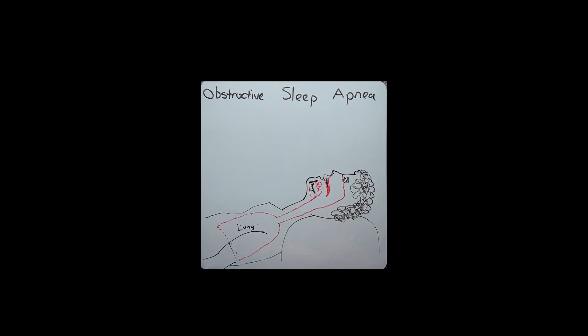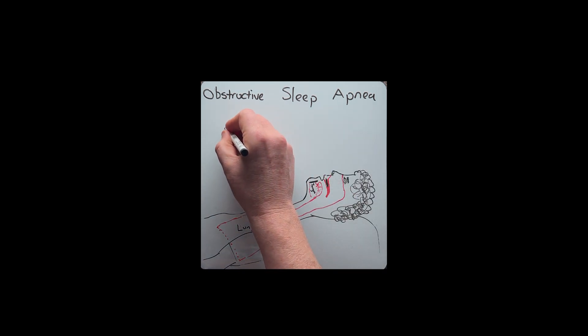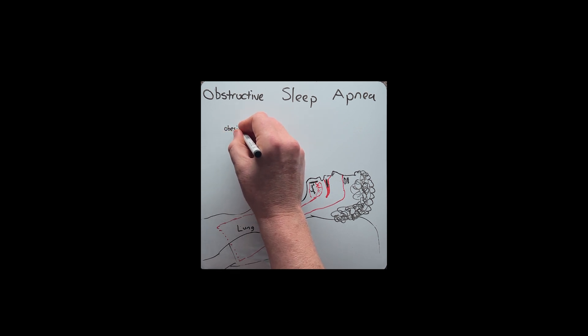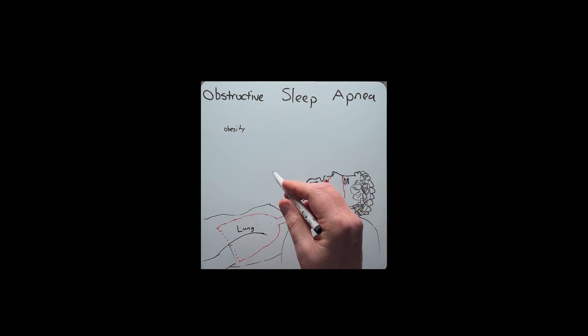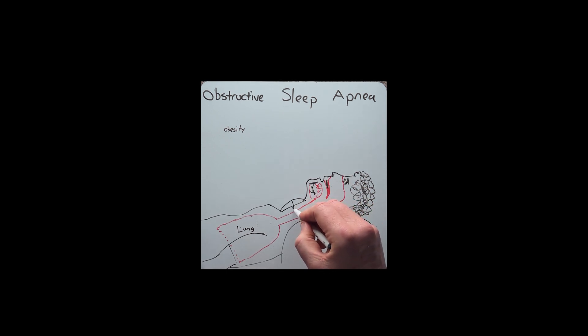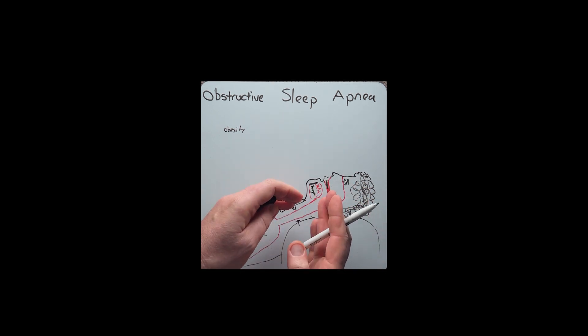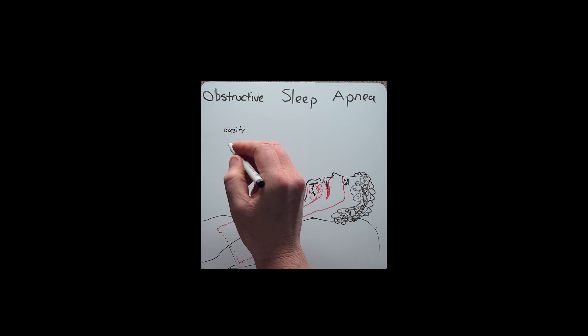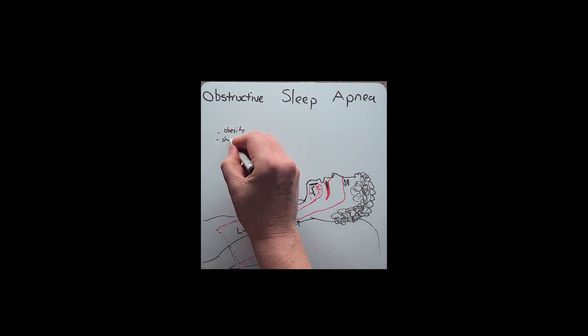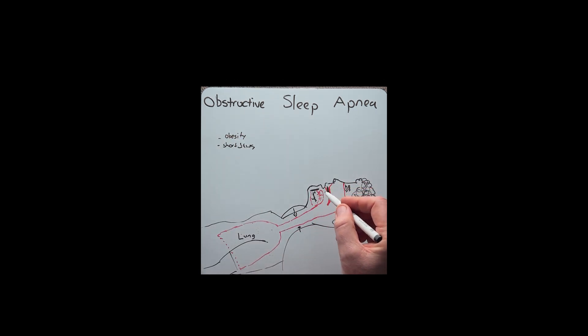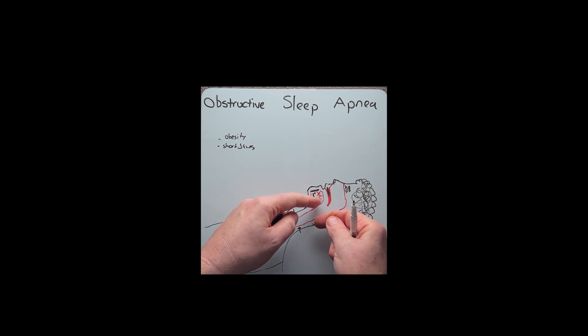Now for some people, notably those who are obese, particularly around the neck, that extra fat causes pressure to push on the airway, which narrows it. Some individuals who have short jaws have their mandible cause their tongue to push down and obstruct their airway.